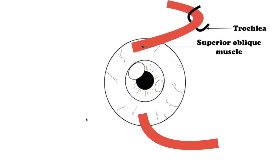Now let's talk about the oblique muscles. There are two oblique muscles: the superior and inferior obliques. Unlike the recti group of muscles, they do not originate from the common tendinous ring. From their origin, the oblique muscles take an angular approach to the eyeball.